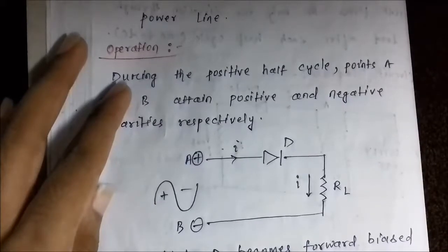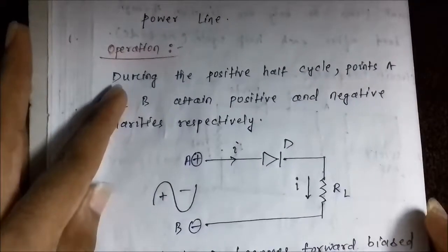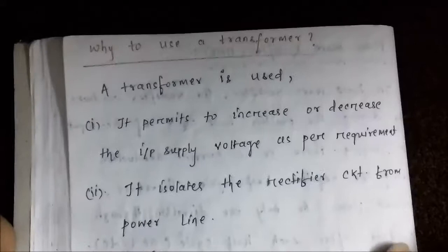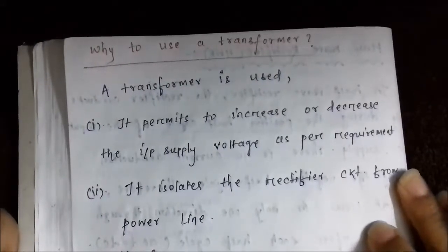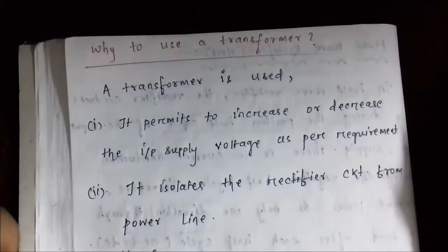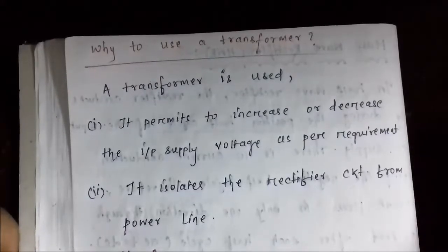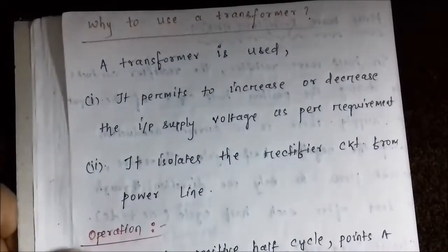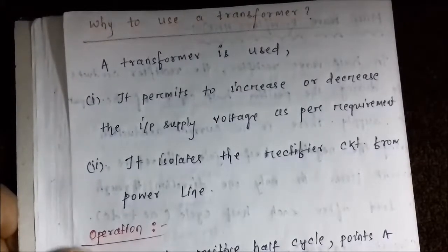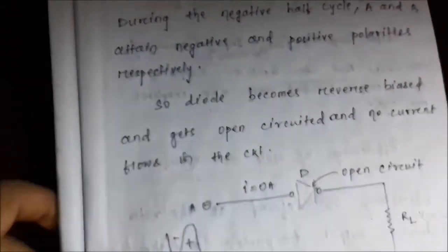Since this circuit is activated only during the positive half cycle and works only during half of the duration of the signal waveform, it is called a half wave rectifier — it rectifies only half of the signal waveform. Regarding the necessity of a transformer: it permits increasing or decreasing the input supply voltage as per requirements. A step-up transformer can be used when higher voltage is needed, and a step-down transformer when lower voltage is required. Additionally, the transformer isolates the rectifying circuit from the power line, protecting it from damage.